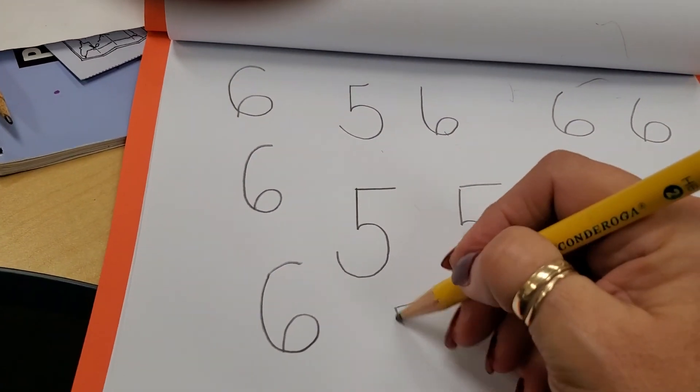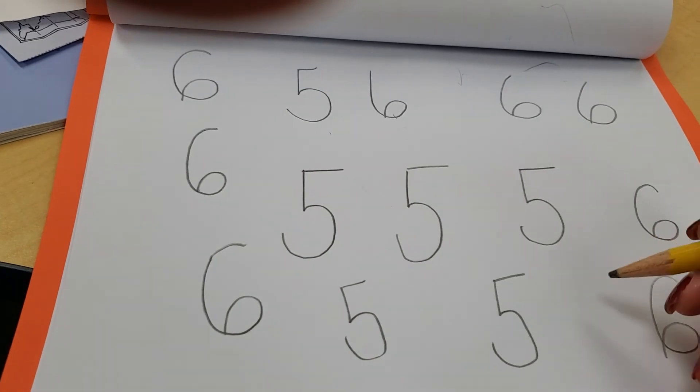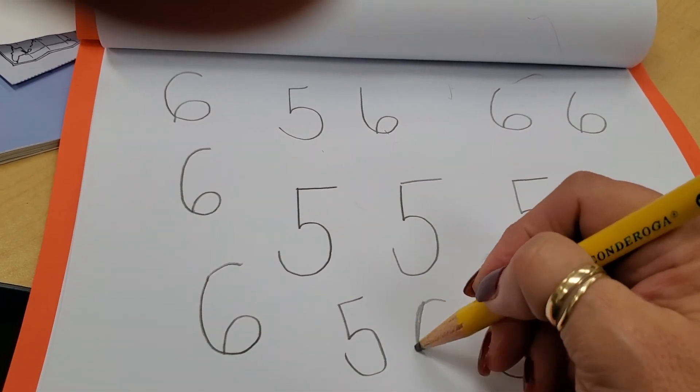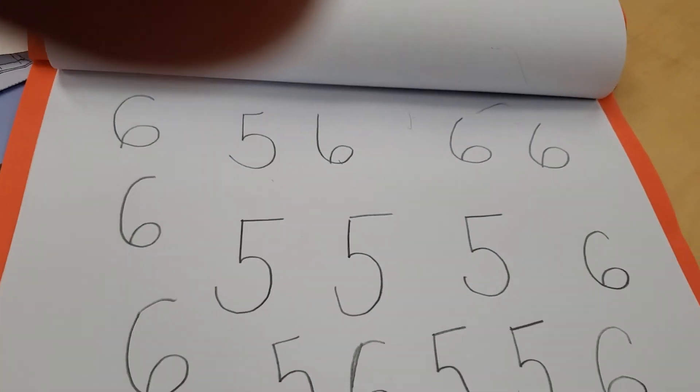One more time, show me a five. Down and around, down and around, and put a top on it, and show me a six. A C, with a circle at the bottom.